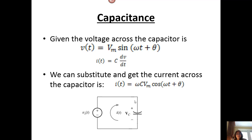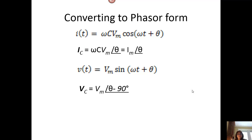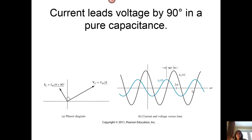For capacitors, we know the current is C dV/dt, and so with our ICE acronym, the current leads the voltage by 90 degrees for capacitors. Given the value of the voltage, we can rewrite that as V sub m times the cosine of omega t plus theta minus 90, converting to our standard form. We can then derive the current as omega C V sub m times the cosine of omega t plus theta. In phasor form, the current leads the voltage by 90 degrees in capacitance, as seen in both the unit circle phasor form and the time domain form.